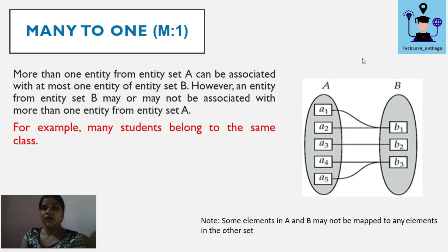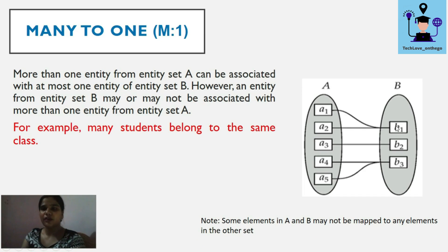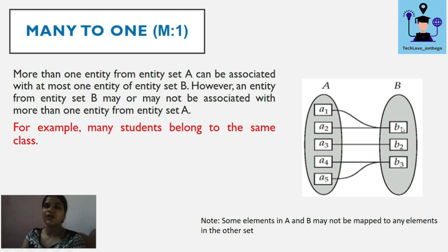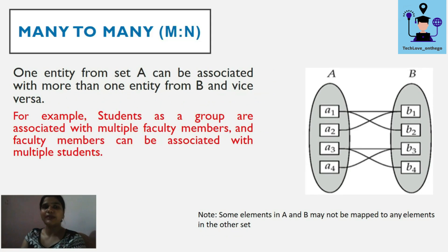Many-to-one means many entities from set A can be connected with a single entity in B, but the reverse is not allowed — a single entity from A cannot connect to more than one entity in B. For example, many students in a class belong to a single class. This is many-to-one.